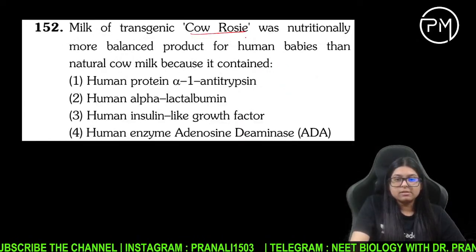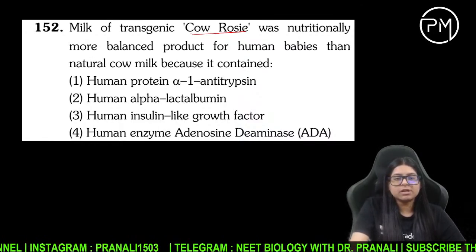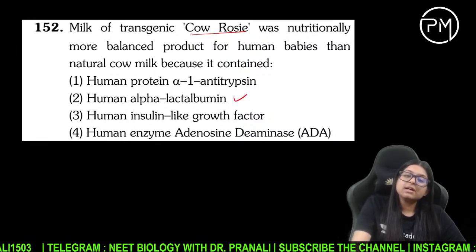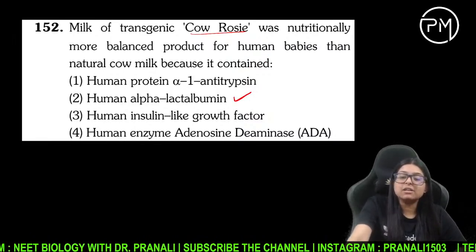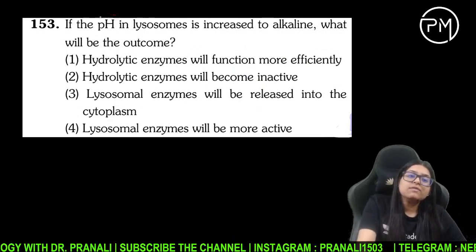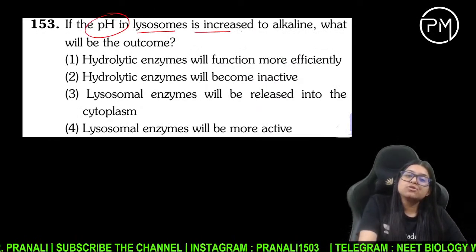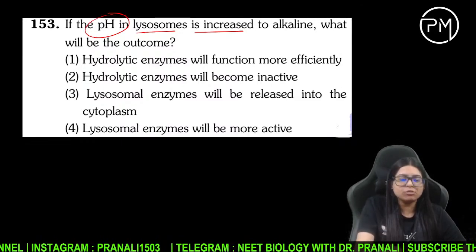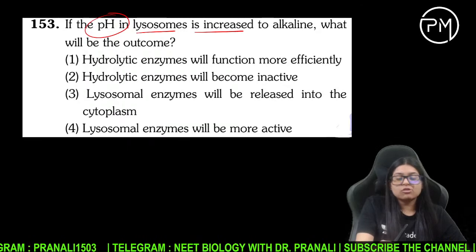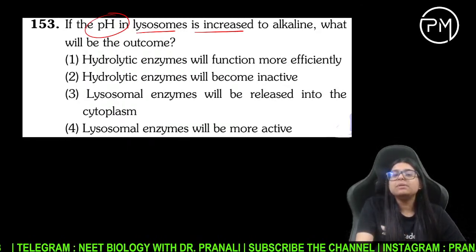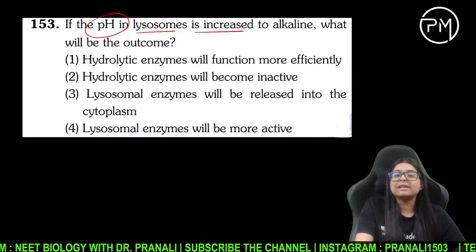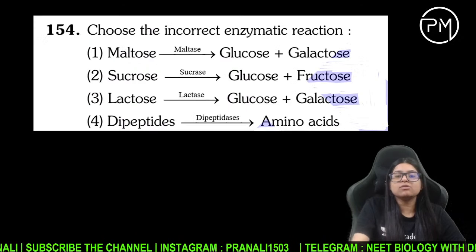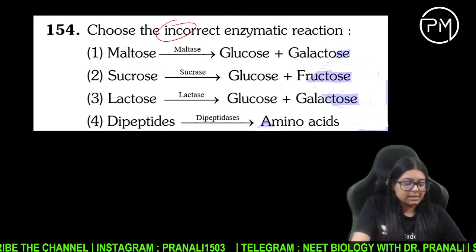Cow Rosie nutritionally zyada accha milk produce kar rahi thi human babies ko palaane ke liye — usmein human alpha-lactalbumin tha. If the pH in lysosome is increased to alkaline — lysosome ka pH acidic hai — agar alkaline ho gaya toh hydrolytic enzymes jo acidic pH mein kaam karte the, ab alkaline pH mein kaam nahi karenge — inactive ho jaayenge.